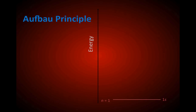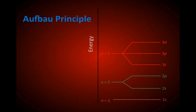When n equals 1, we're in the lowest energy level with one sublevel, 1S. In the second energy level there are two sublevels: 2S and 2P. In the third energy level there are three sublevels: 3S, 3P, and 3D. Be careful at the fourth energy level — the 4S sublevel actually has less energy than 3D.